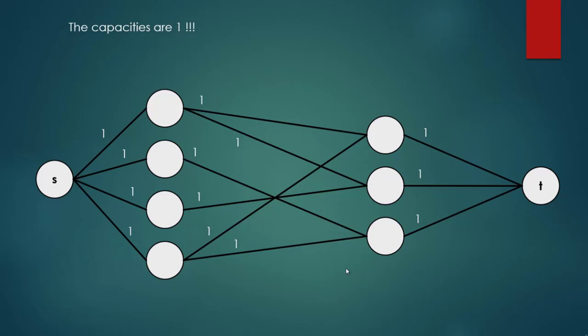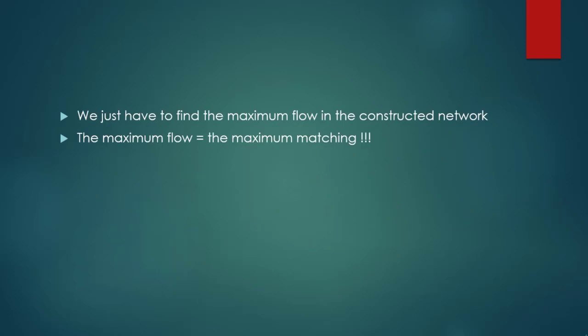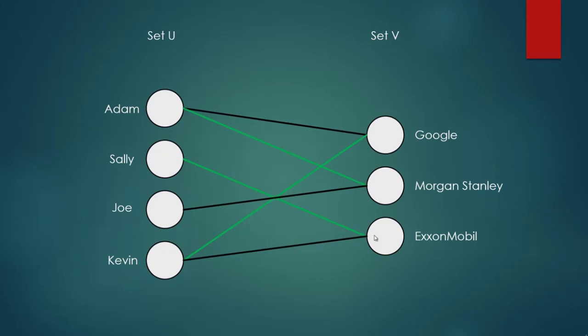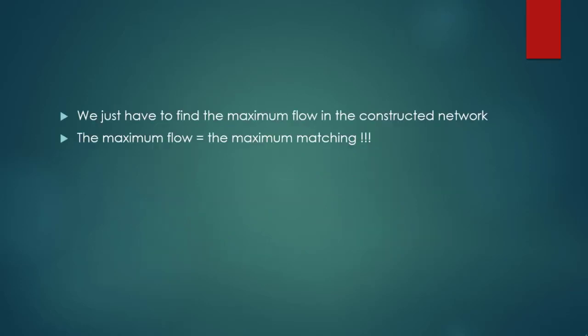Flows are initialized to 0, and we run our maximum flow algorithm on this flow network. We find the maximum flow in the constructed network, and the maximum flow equals the maximum matching. In this case it yields 3, meaning exactly 3 applicants can get a job — one at Google, one at Morgan Stanley, and one at ExxonMobil. That's all about maximum matching.